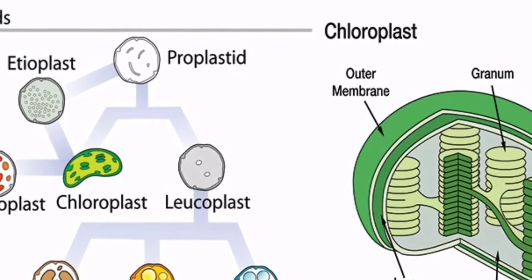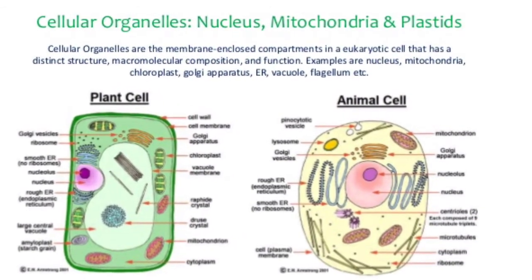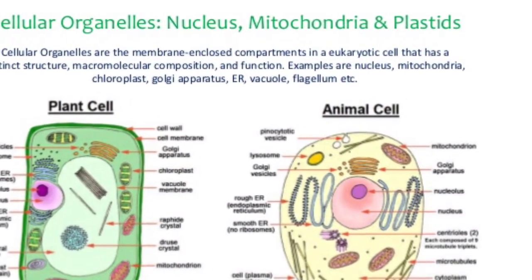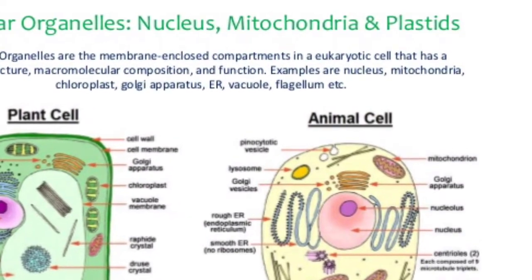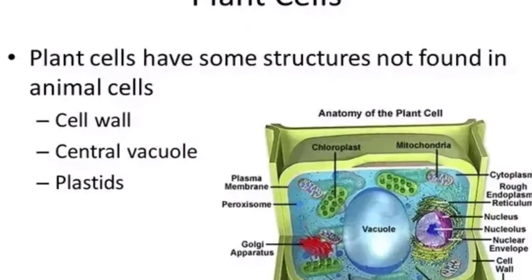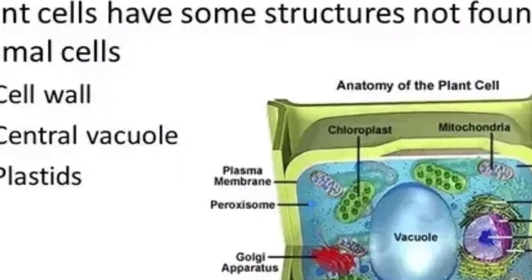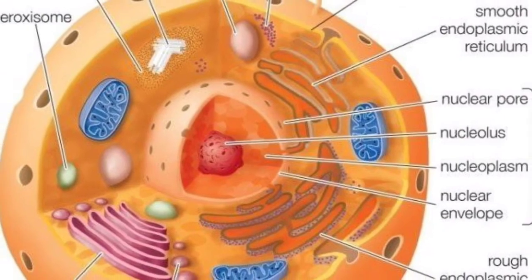Plastids are of different colors. Some of them contain a green pigment called chlorophyll. Green-colored plastids are called chloroplasts — they provide the green color to leaves. Chlorophyll in the chloroplasts of leaves is essential for photosynthesis. Now, there are some differences between plant cells and animal cells. Some parts are common to both: cell membrane, nucleus, nuclear membrane, cytoplasm, and vacuole. But the cell wall is present only in plant cells, not in animal cells. Also, plastids are present only in plant cells, not in animal cells.